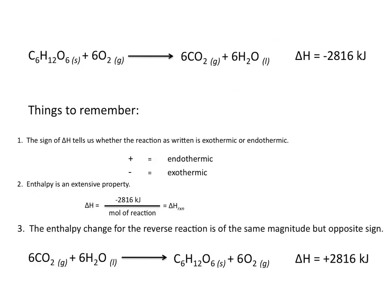The enthalpy change for the reverse reaction is of the same magnitude but opposite sign. So if we flip this reaction and write it as 6CO2 plus 6H2O gives us C6H12O6 plus 6 moles of oxygen, the delta H value for this reaction is a positive 2,816 kJ.